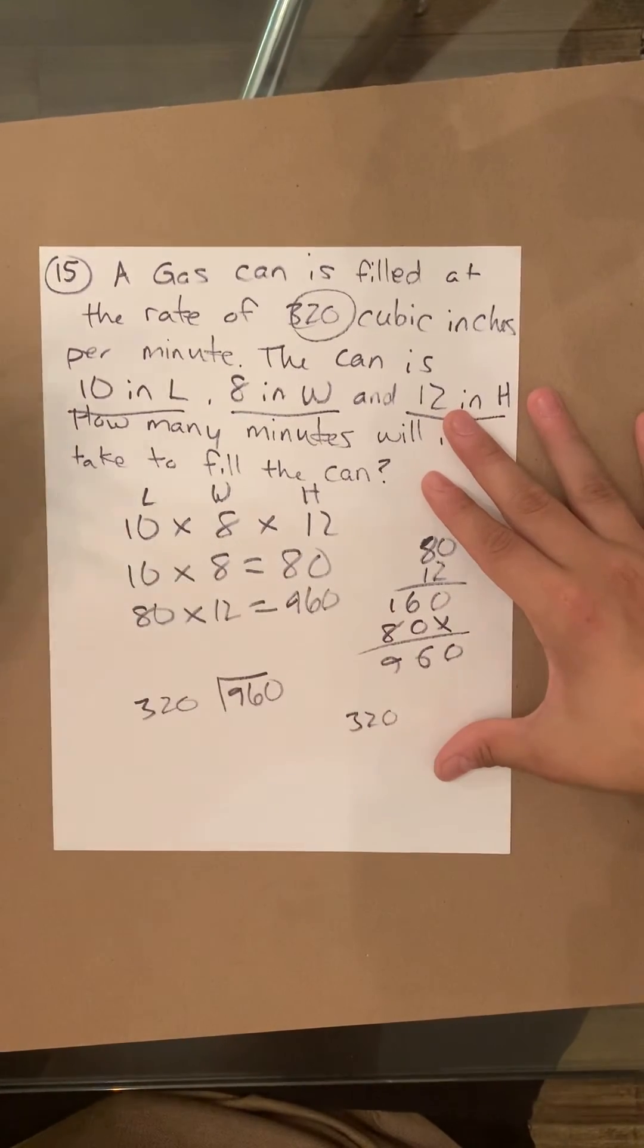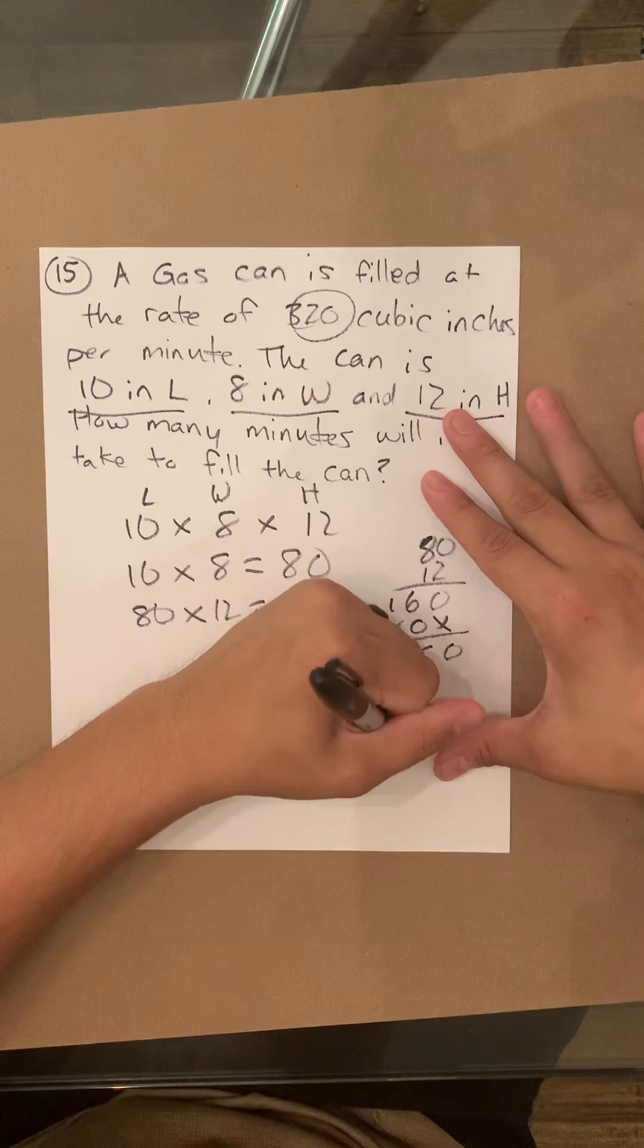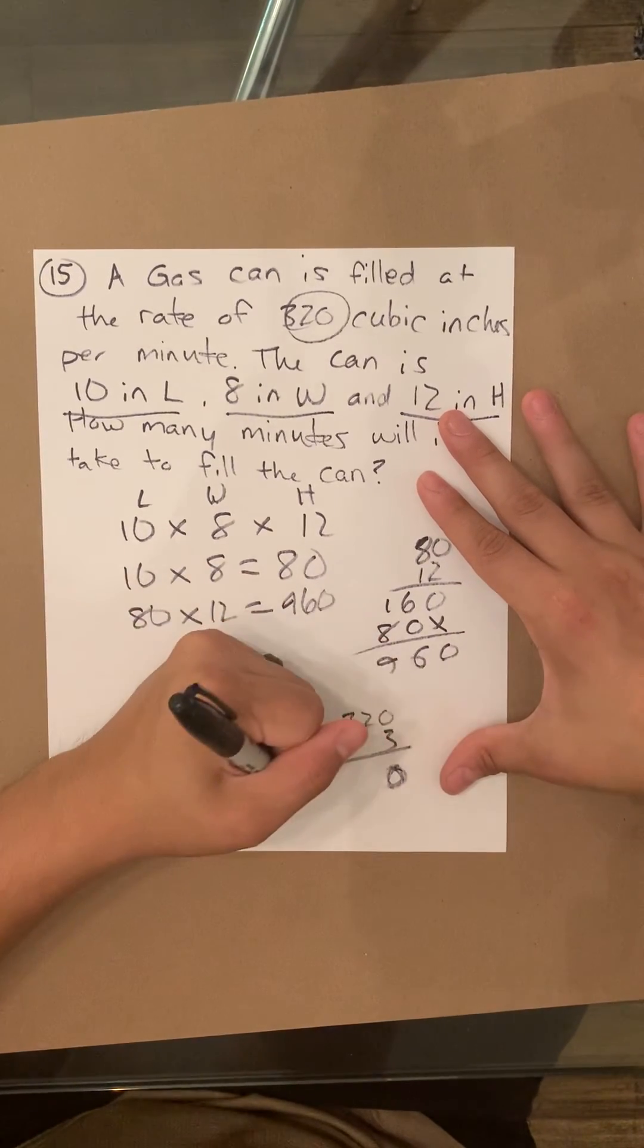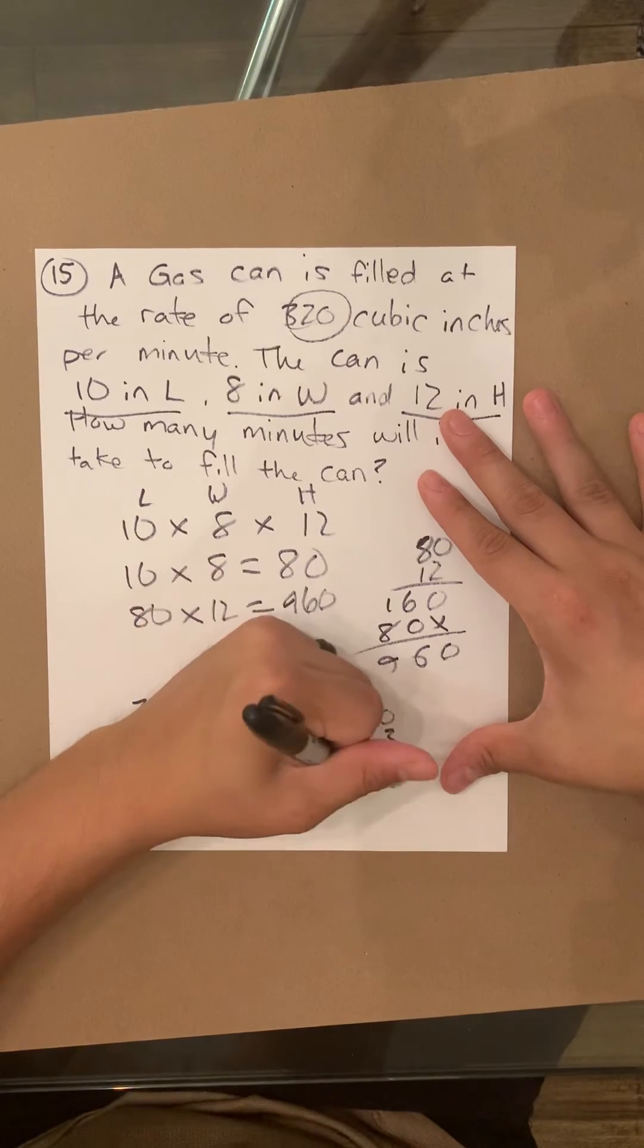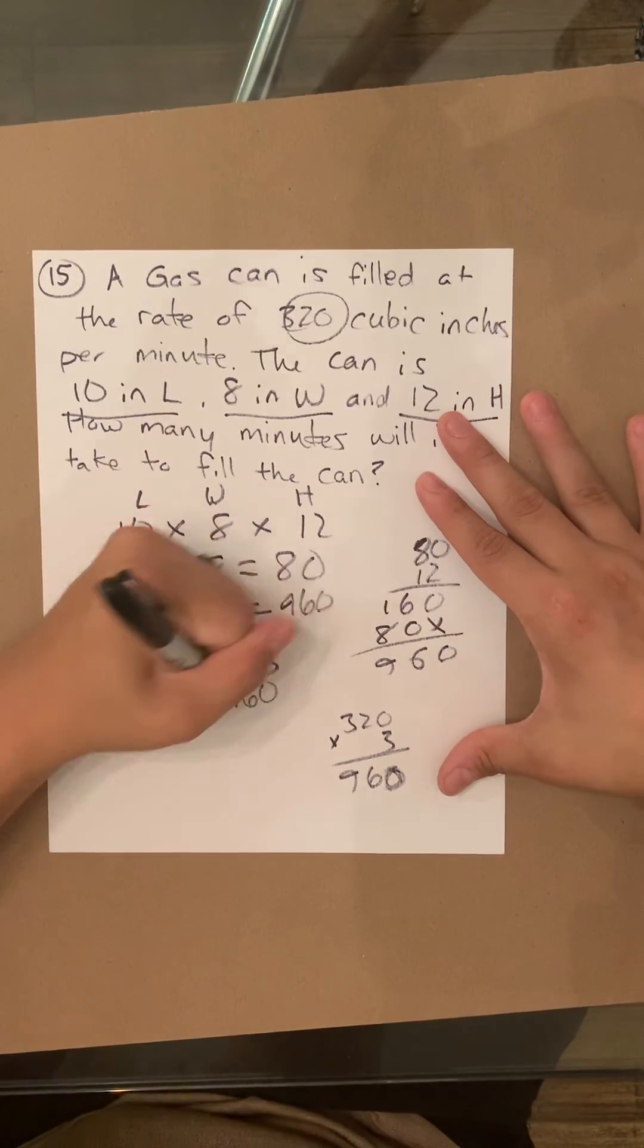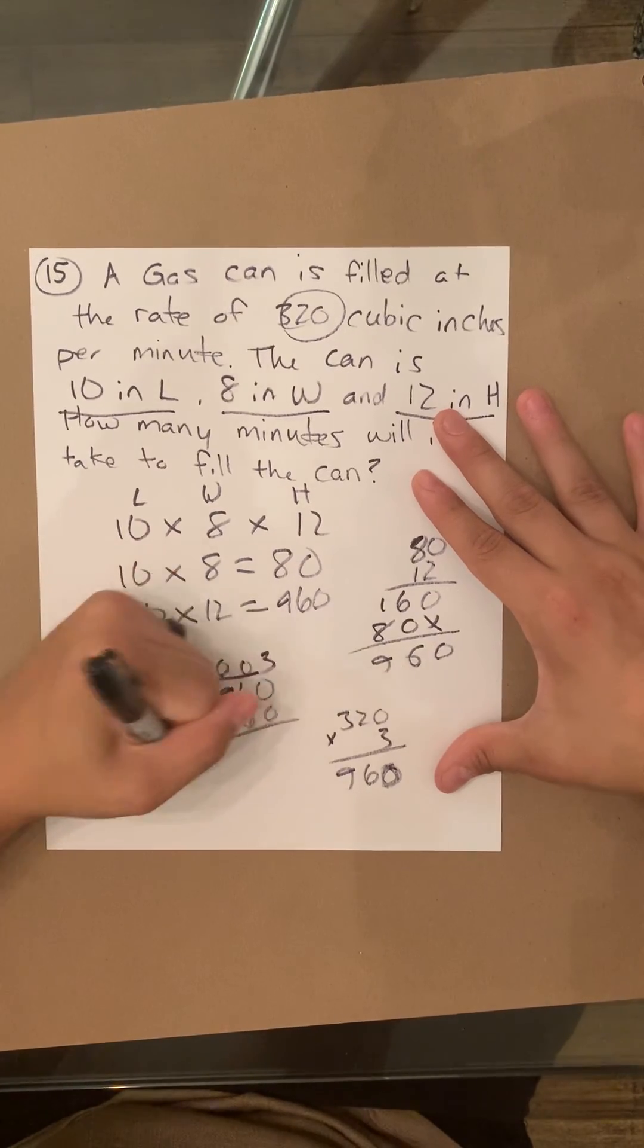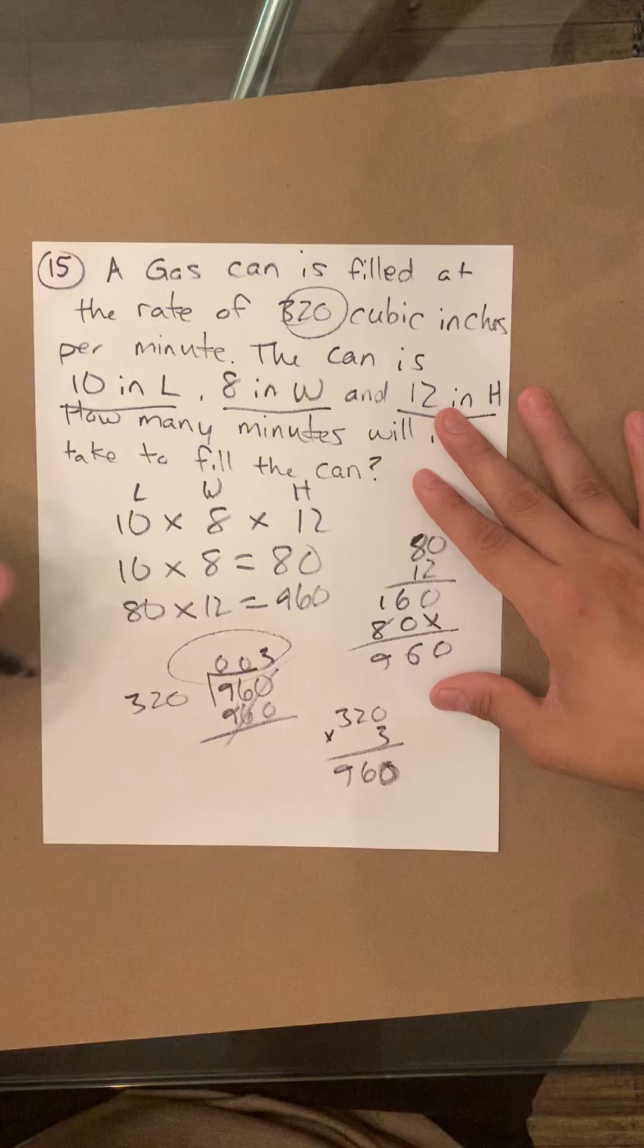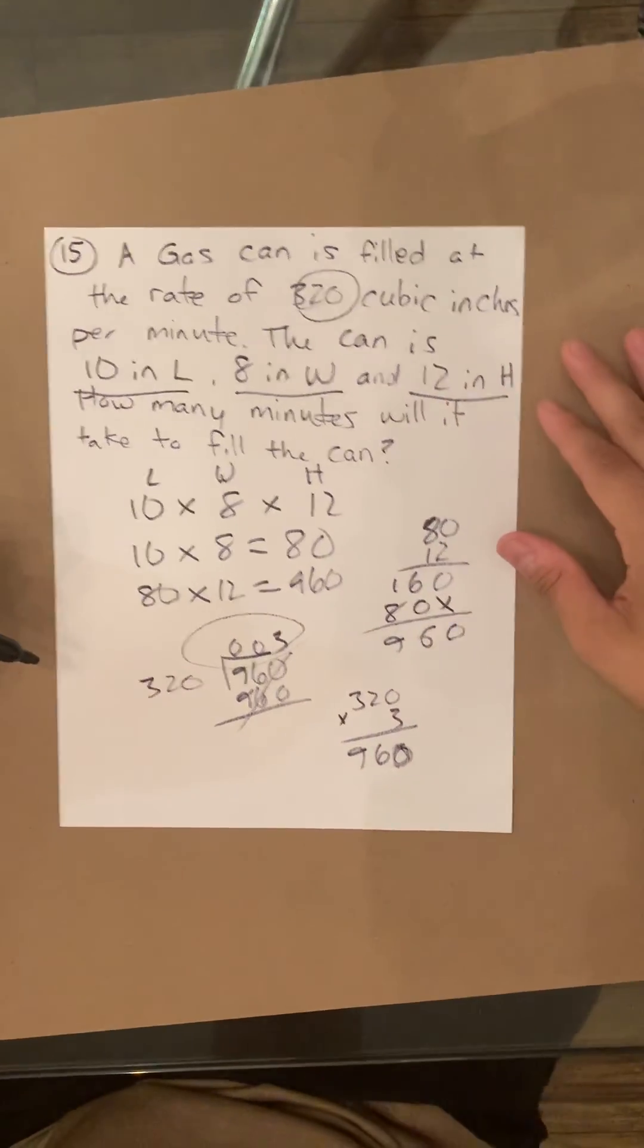320, because 3, 6, 9, times 3. 3, or excuse me, 0. 3 times 2 is 6. 3 times 3 is 9. 0, 0, 3. Your answer? 3 minutes to fill 960 cubic inches.